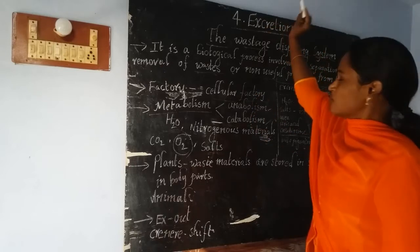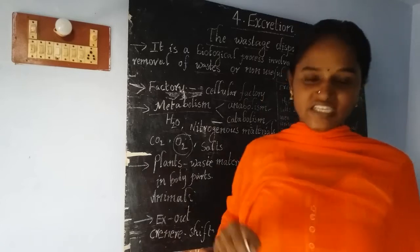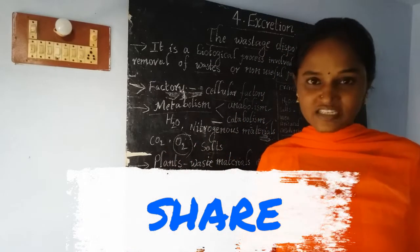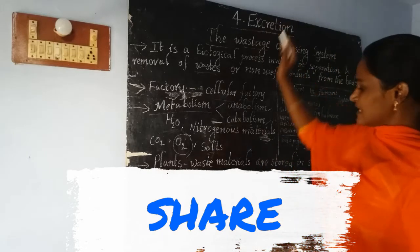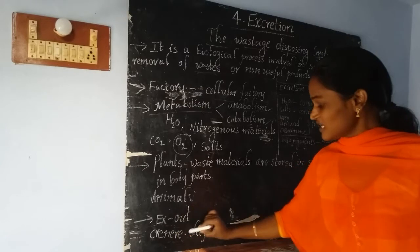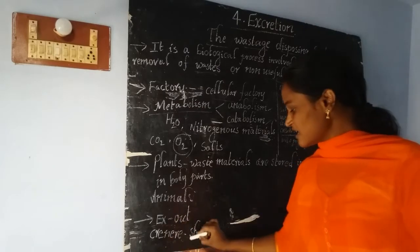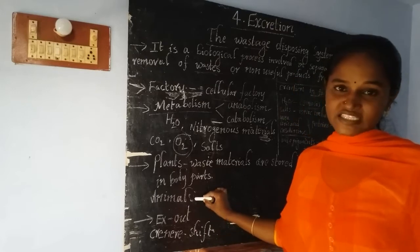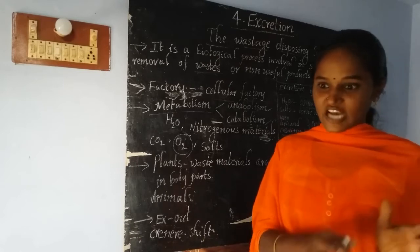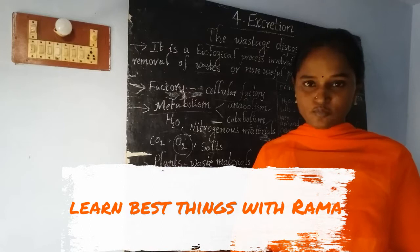What is the meaning of the word excretion? Excretion is a Latin word. 'Ex' means 'out' and 'crinare' means 'shift.' Together, we call it 'outshift' — meaning we are shifting the waste produced inside the body to the outside.